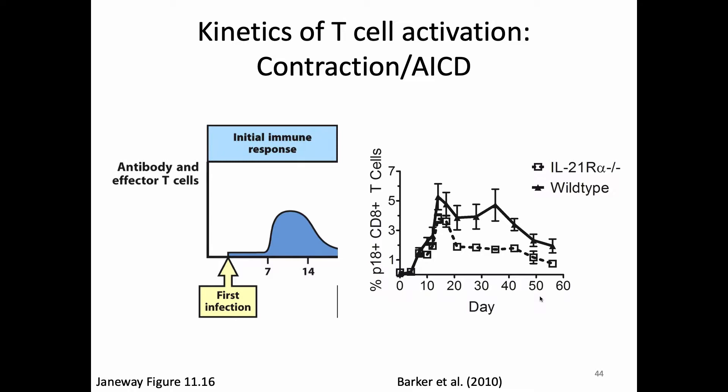This is called the contraction phase, also known as activation-induced cell death, AICD. This process is really important. You can imagine how many T-cell responses you've made in your life — it's a good number. When you're sick and making an immune response, your lymph nodes swell. The reason is that these cells have divided and divided and made a whole lot of each other — this expansion is why your lymph nodes swell.